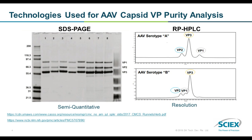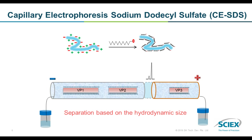Traditionally, the purity of AAV capsid viral proteins has been analyzed using SDS-PAGE technology. It is useful for an initial estimate in the development lab. However, SDS-PAGE technology has very limited quantitation capability and therefore is not robust enough to be used for quality control purposes. The reverse phase HPLC method has also been used for capsid viral protein purity assessment. However, it has limited resolution for reliable quantitation. The three viral protein peaks of AAV serotype 8 are not baseline resolved, so quantitation of those peaks is not accurate. Besides, the elution order of the three viral proteins might be inconsistent for different serotypes, which could introduce more work for scientists to identify each viral protein peak.